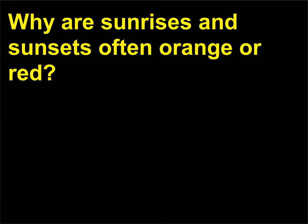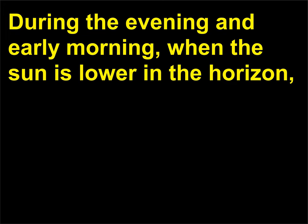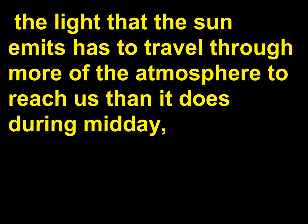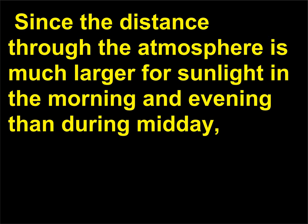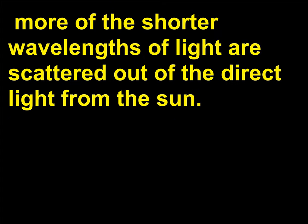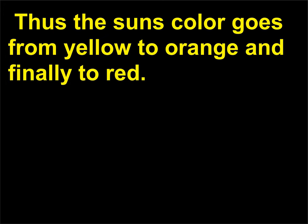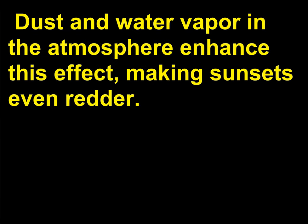Why are sunrises and sunsets often orange or red? During the evening and early morning, when the sun is lower in the horizon, the light that the sun emits has to travel through more of the atmosphere to reach us than it does during midday, when the path through the atmosphere is shorter. Since the distance through the atmosphere is much larger for sunlight in the morning and evening than during midday, more of the shorter wavelengths of light are scattered out of the direct light from the sun. Thus the sun's color goes from yellow to orange and finally to red. Dust and water vapor in the atmosphere enhance this effect, making sunsets even redder.